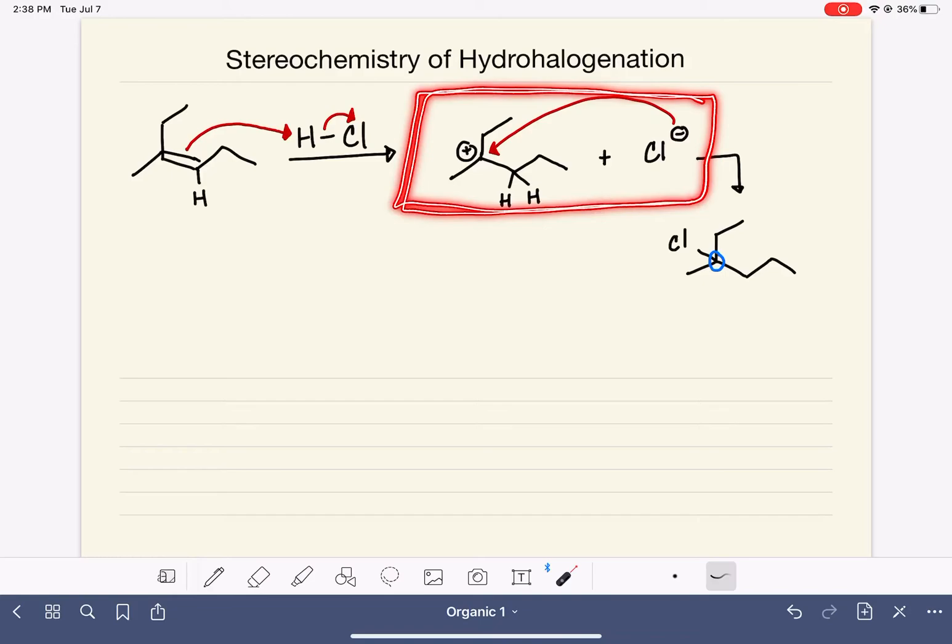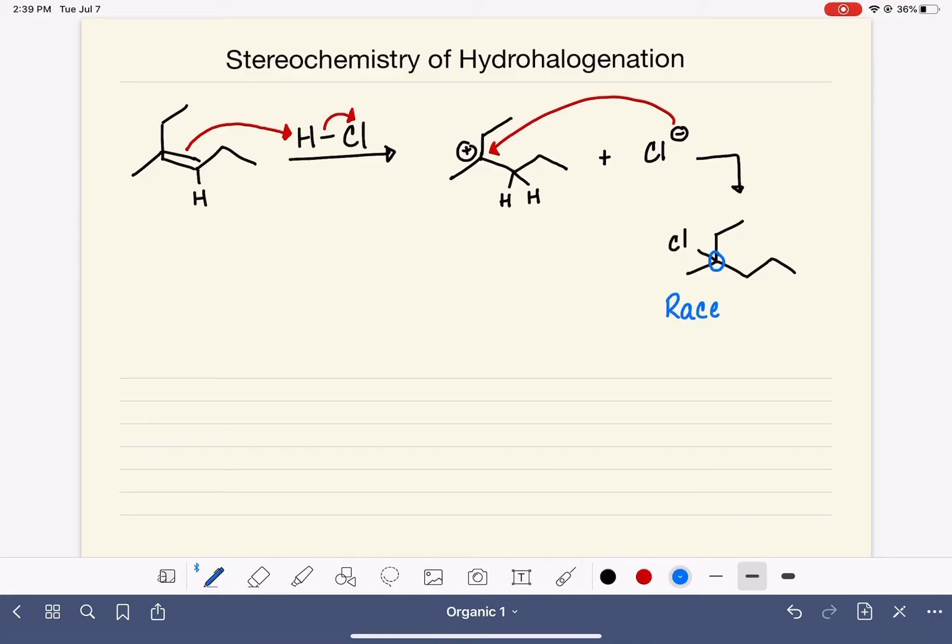The SN1 reaction has this exact same step happening. After the leaving group falls off and a carbocation is formed, a nucleophile comes in and attaches itself to that positively charged carbon. And we've talked about how when the nucleophile comes in and attaches itself to the positively charged carbon, it can approach the positively charged carbon from any side. There isn't any sort of restriction on where it goes, which means that we will end up with a racemic mixture of our products. 50% of them will have the R stereochemistry, and 50% of them will have the S stereochemistry.